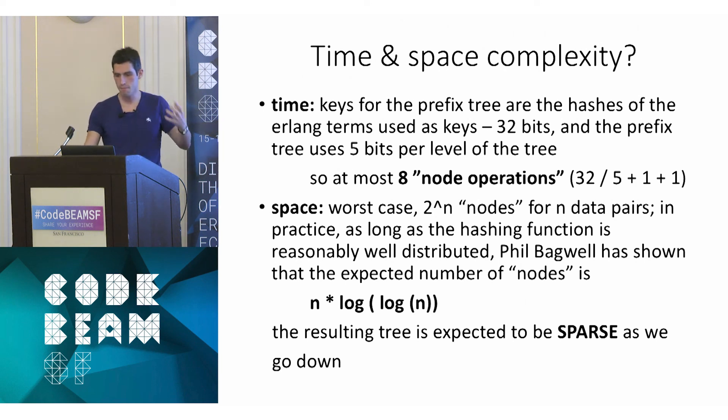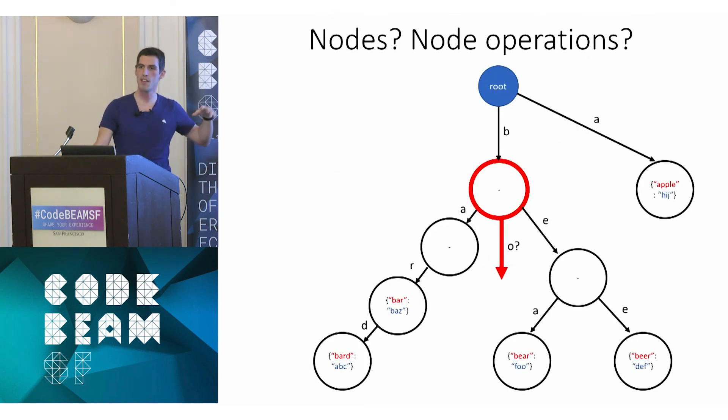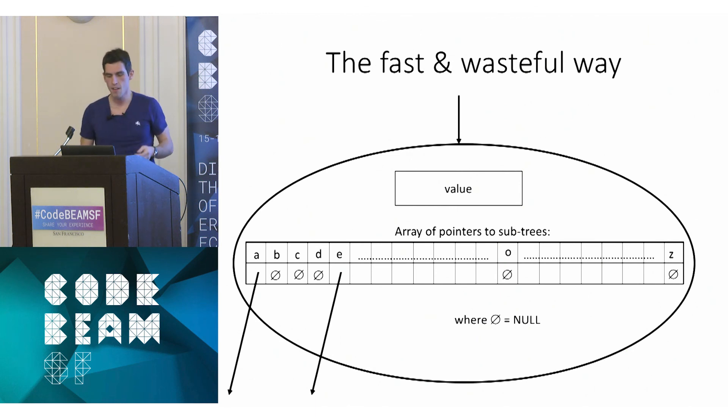At this point, we have this data structure that seems to be doing what we want in reasonable time, reasonable space. But you notice I put quotes around nodes and node operations here because there's something I conveniently hand-waved before, when I was saying, oh, we're looking for the subtree corresponding to letter O, right? And I didn't really explain what a node is and how you look up the subtree associated to a letter. And that's really important. It sounds like we need some kind of map here again. We have a key, which is the current character we're considering in the global key, and we want to get the pointer for the next subtree for that key. And so we want this to be fast and not take too much space.